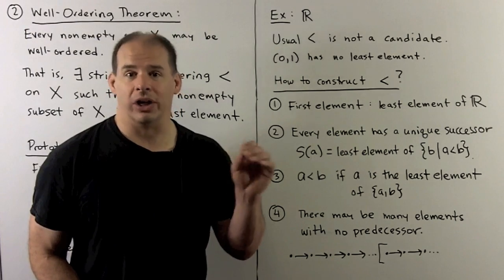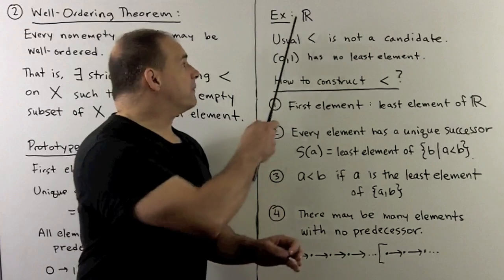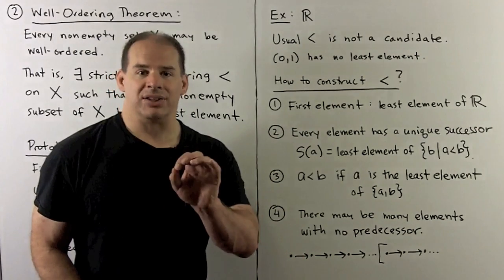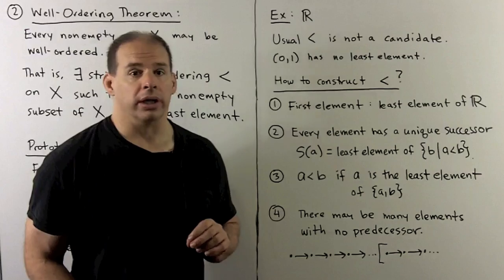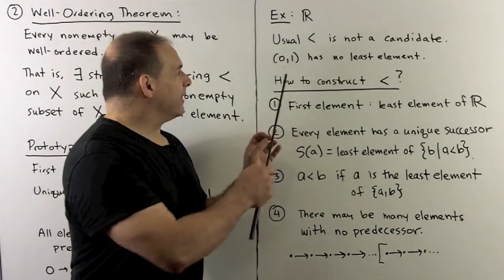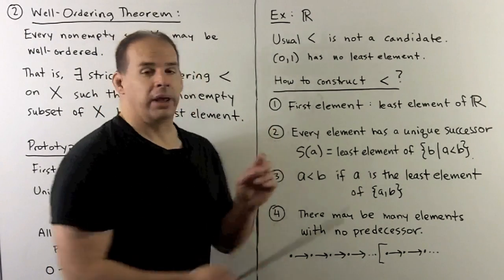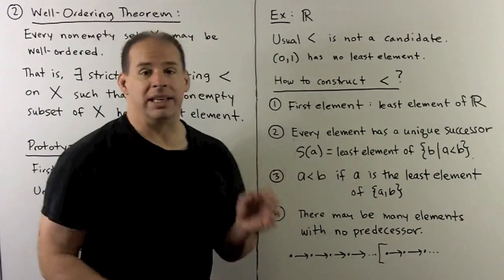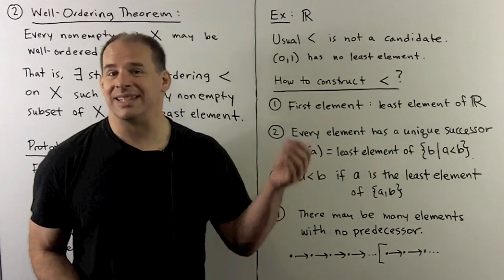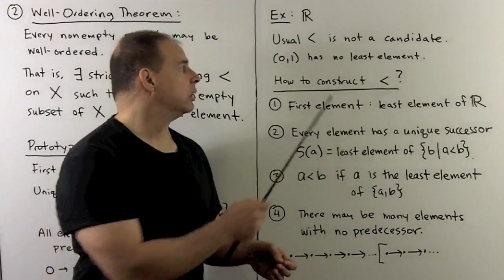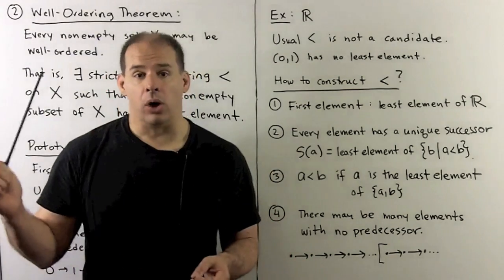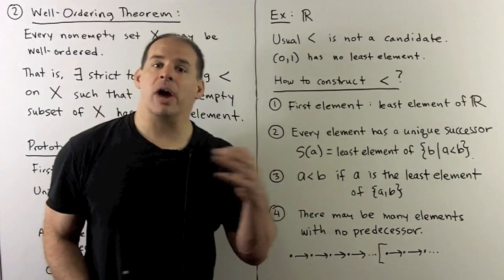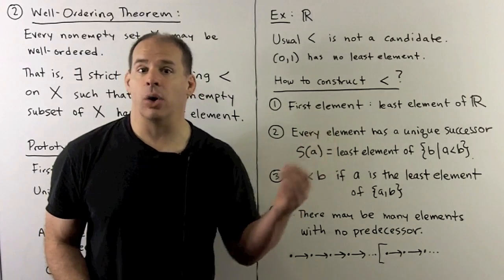Now, what's counterintuitive about the well-ordering theorem? It says we could put a well-ordering on the real numbers. At first, this doesn't seem like a problem, but if we use the usual less than, that's not going to be a well-ordering. If we take the subset given by the interval from 0 to 1, not including the endpoints, with respect to less than this set has no least element. We would want it to be 0, but it's not in the set. The well-ordering theorem promises a well-ordering on the reals, but it gives no recipe for how to do it, and it's still not known how.